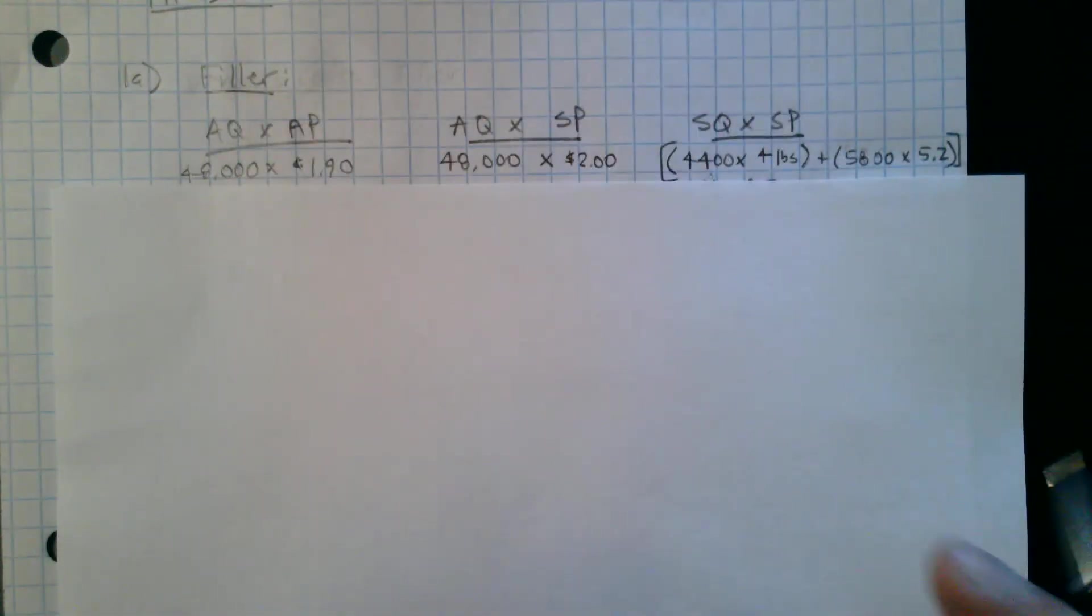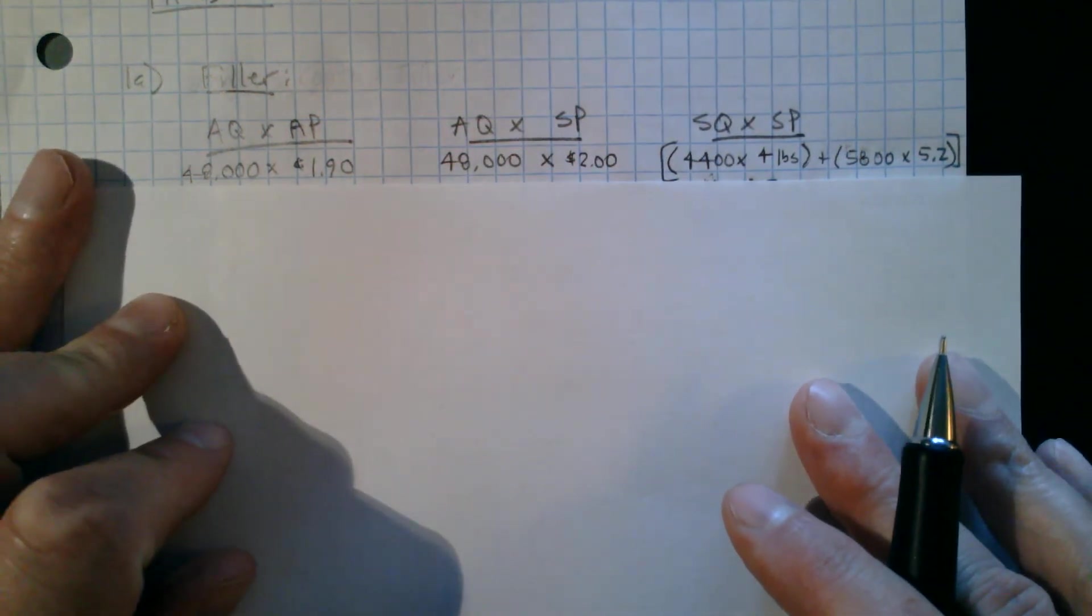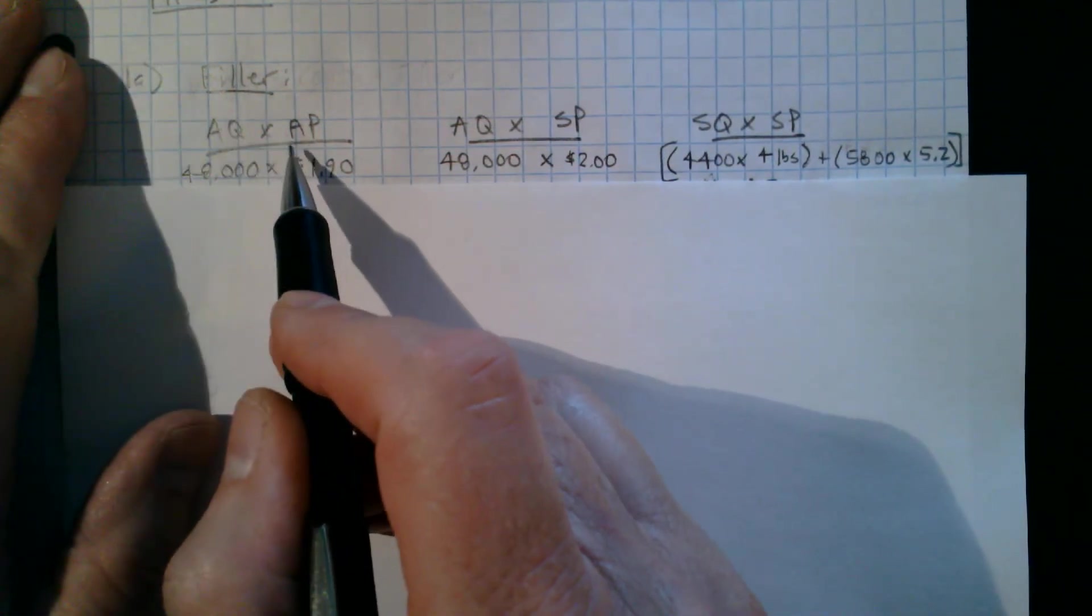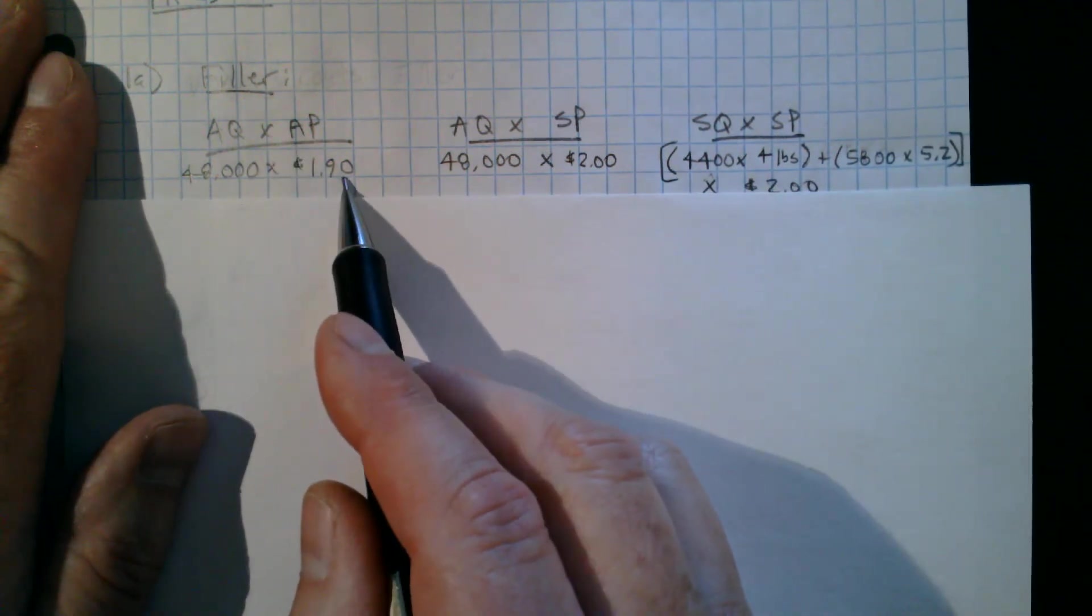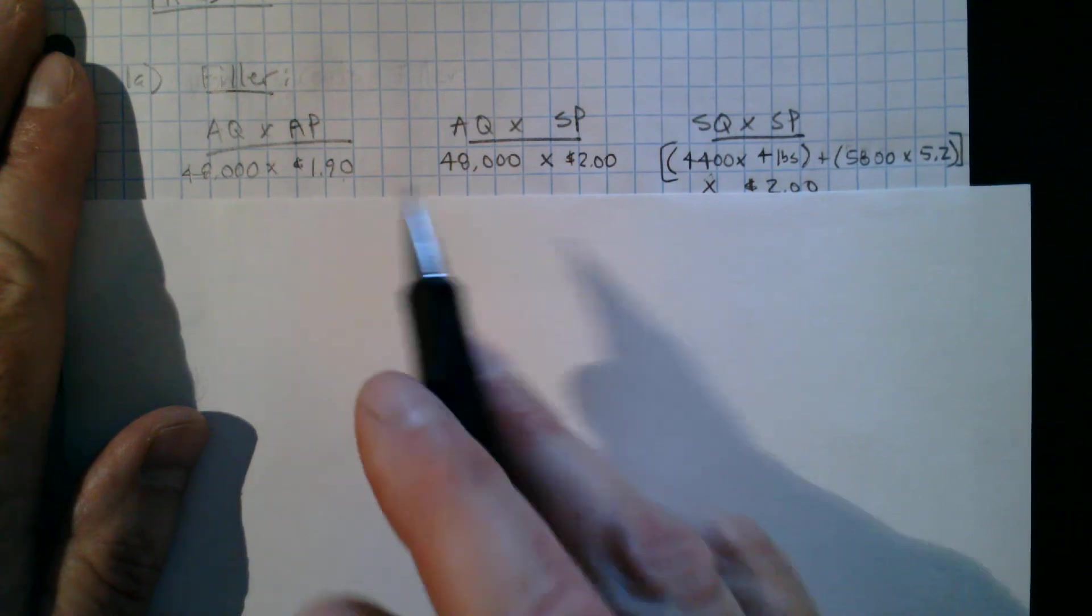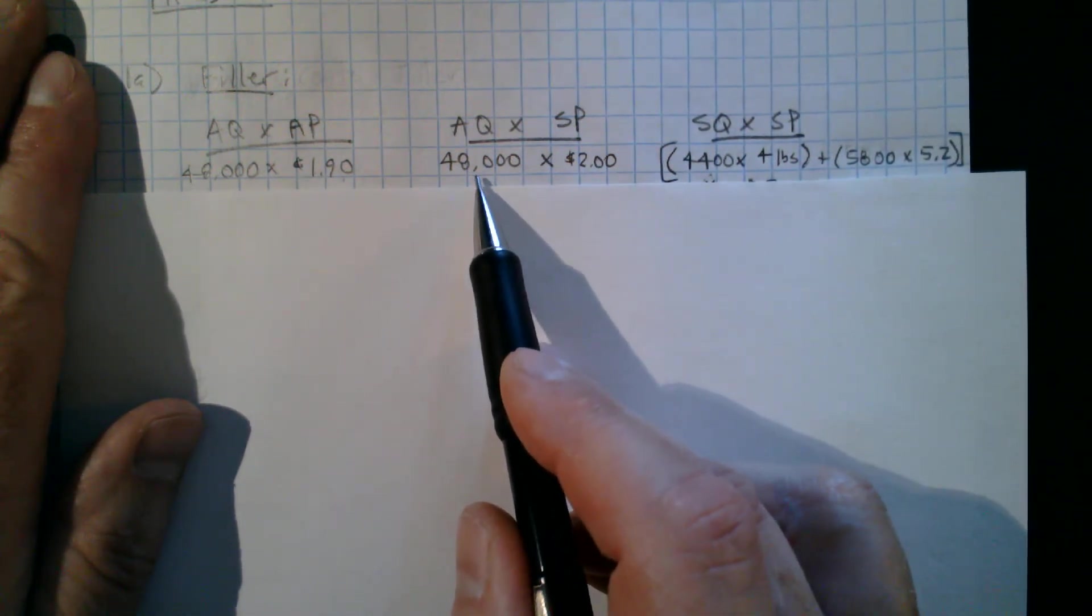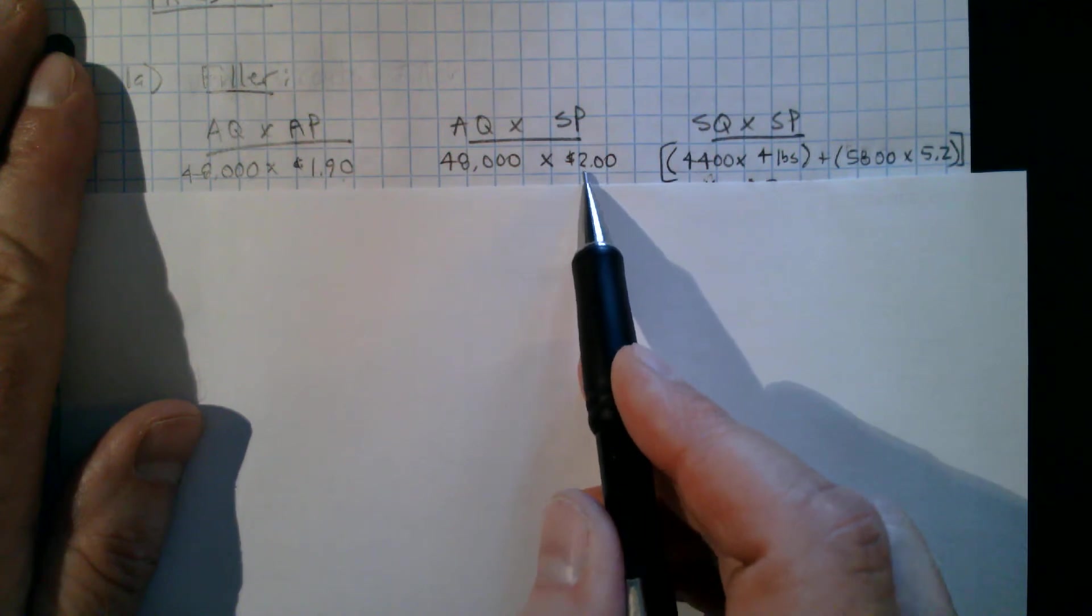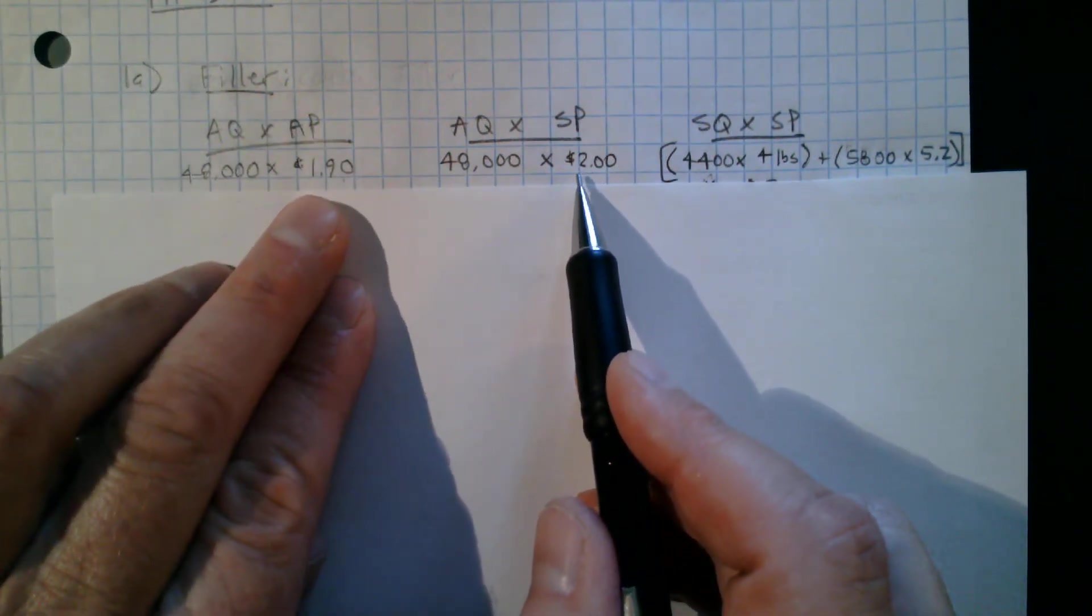So let's figure out those variances. So again, I think the goalpost model is the best way to go here. So actual quantity times actual price paid, that's 48,000 pounds used times $1.90 that I paid per pound. The actual quantity times the standard price, that's the 48,000 I actually used, but I'm now going to compare it to the standard price. So here I'm isolating the effect of the difference in price.